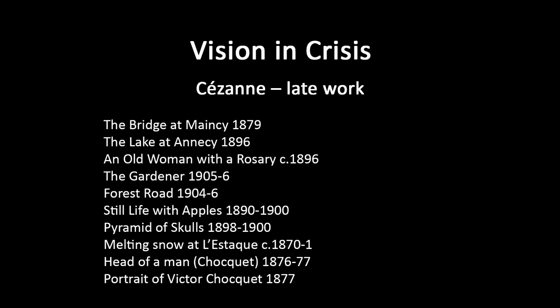Some of these early landscapes — the Melting Snow at L'Estaque from around 1870 to 1871 — have a kind of expressive energy which is equivalent to something you might find in a painting by Van Gogh or even a later Fauvist painter.